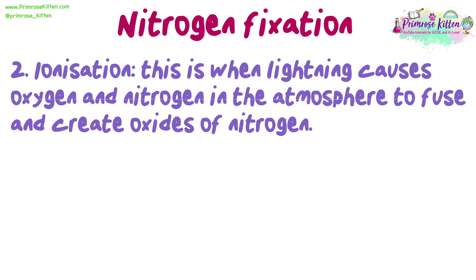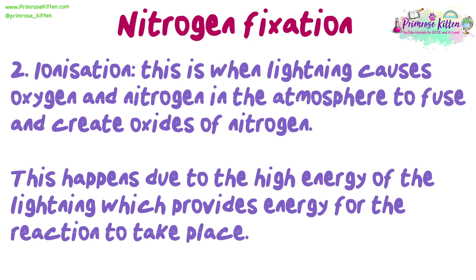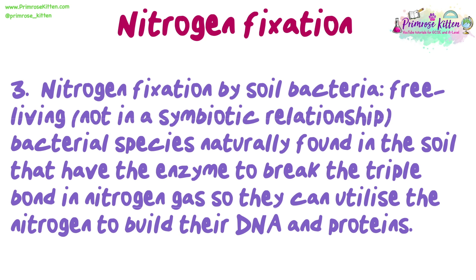Secondly, ionisation. This is when lightning causes oxygen and nitrogen in the atmosphere to fuse and create oxides of nitrogen. This happens due to the high energy of the lightning, which provides energy for the reaction to take place. Thirdly, nitrogen fixation by soil bacteria: free-living bacterial species (not in a symbiotic relationship) naturally found in the soil that have the enzyme to break the triple bond in nitrogen gas, so they can utilise the nitrogen to build their DNA and proteins.